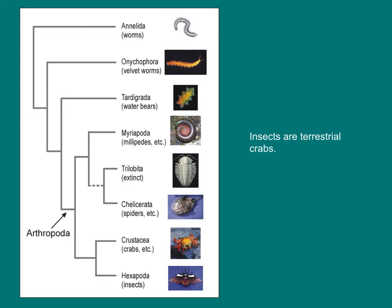Remember from the earlier lecture that insects are essentially terrestrial crabs. They are unique because, unlike most crabs, they can live and reproduce on land, breathe air, and fly.